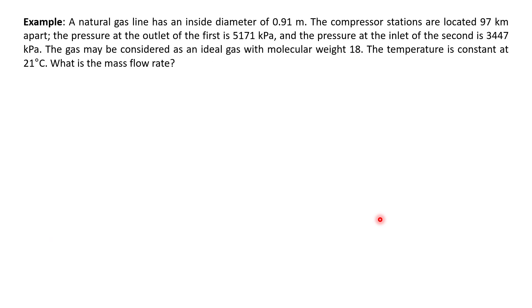Okay, we have another example here. A natural gas line has an inside diameter of 0.91 meter. The compressor stations are located 97 km apart. The pressure at the outlet of the first compressor is 5171 kPa, and the pressure at the inlet of the second is 3447 kPa. The gas may be considered as an ideal gas with molecular weight of 18. The temperature is 21 degrees C. What is the mass flow rate?